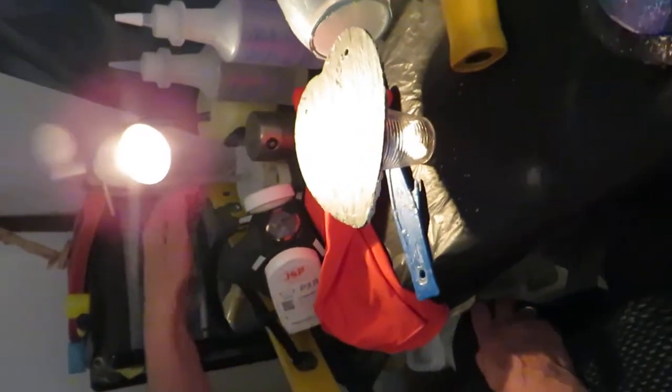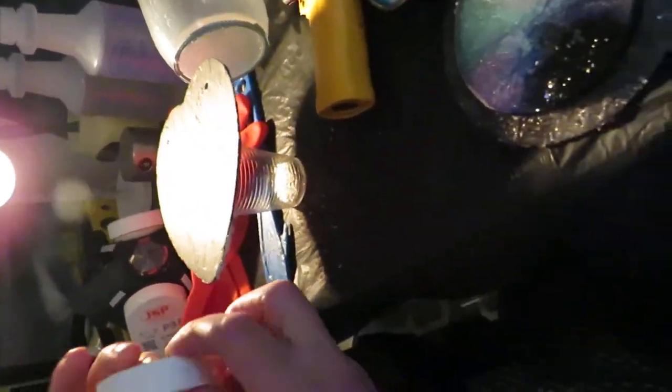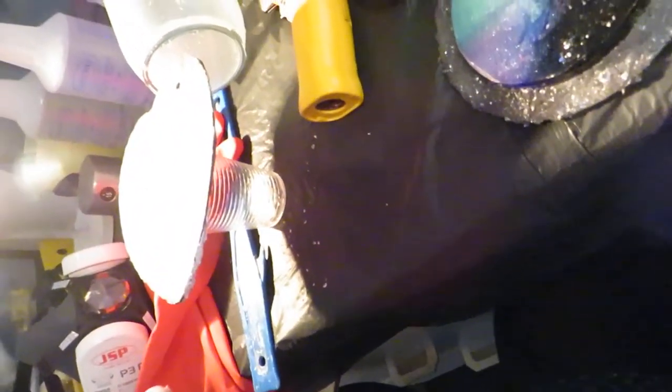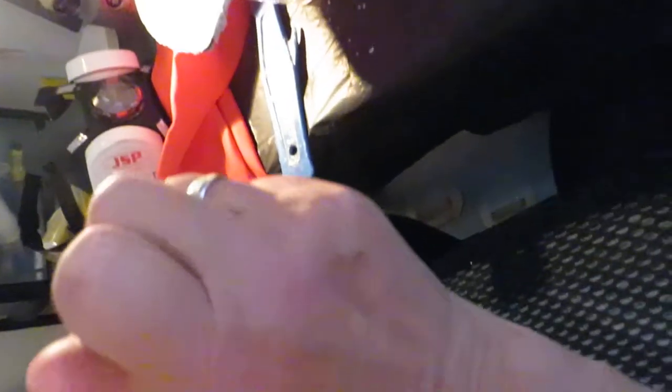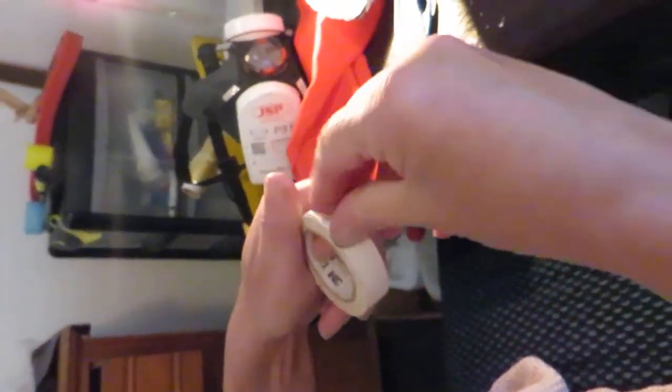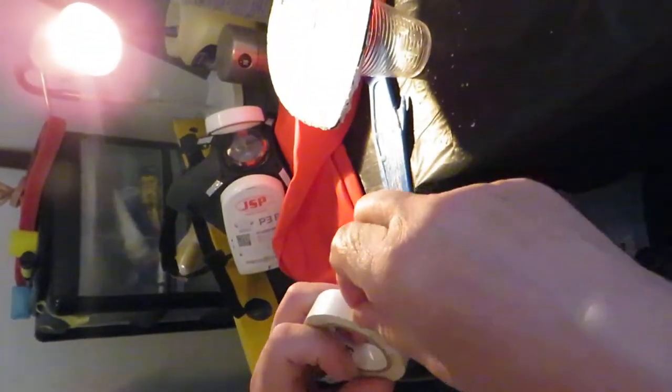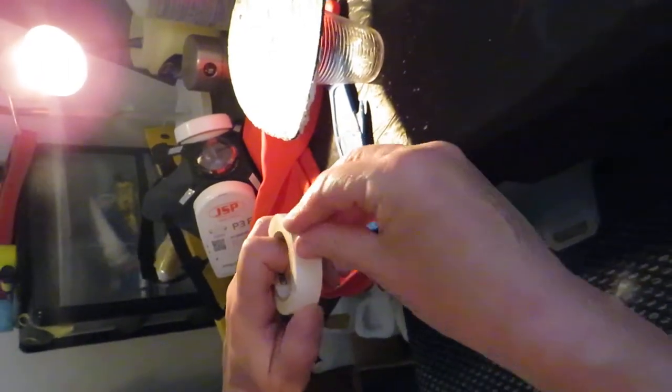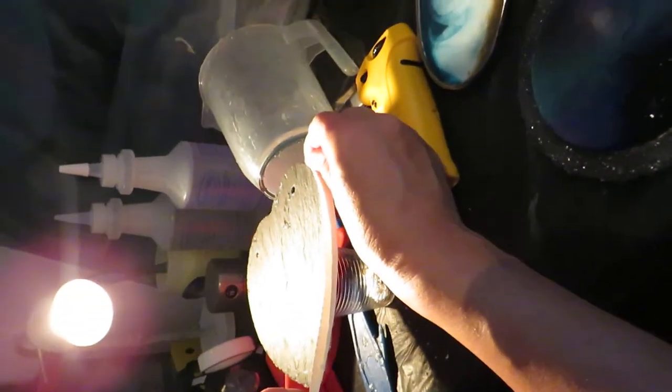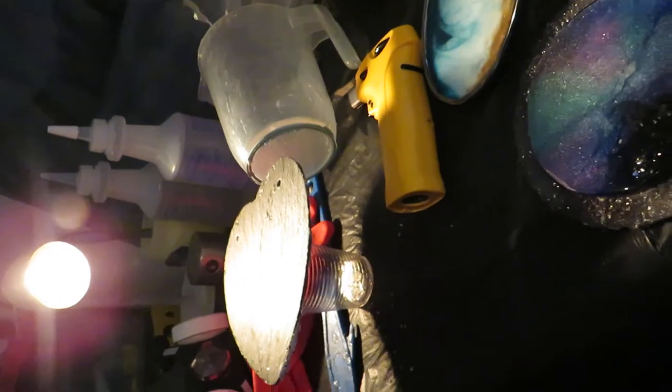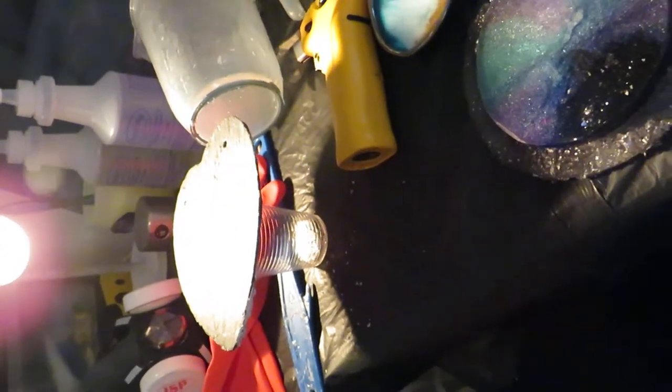You also need your timer because resin has a work time. Whatever your work time is, you really need a timer to know your time is nearly up and get finished, otherwise you could have a gloopy mess. You've got tape - some people like to dam the sides with different types of tape to stop it dripping off. They would dam it like that and then take it off about an hour after, depending again on your resin.